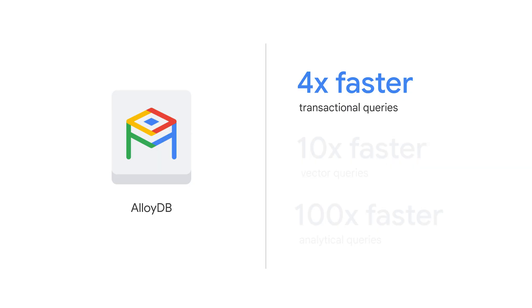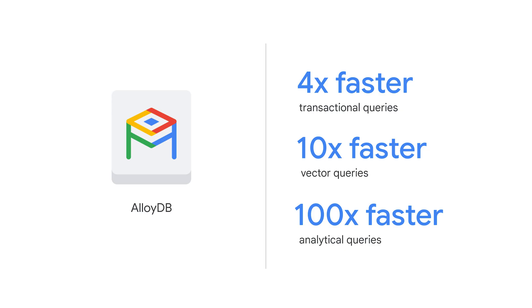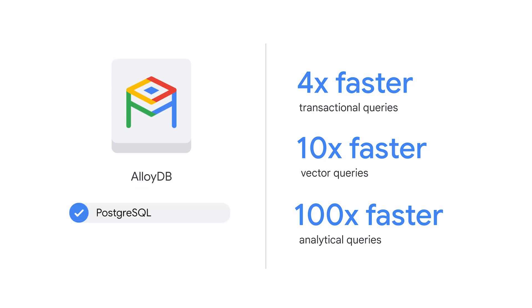AlloyDB is designed for high performance queries, with up to 4x faster transactional, up to 10x faster vector, and up to 100x faster analytical queries. It features PostgreSQL compatibility and advanced GenAI features.